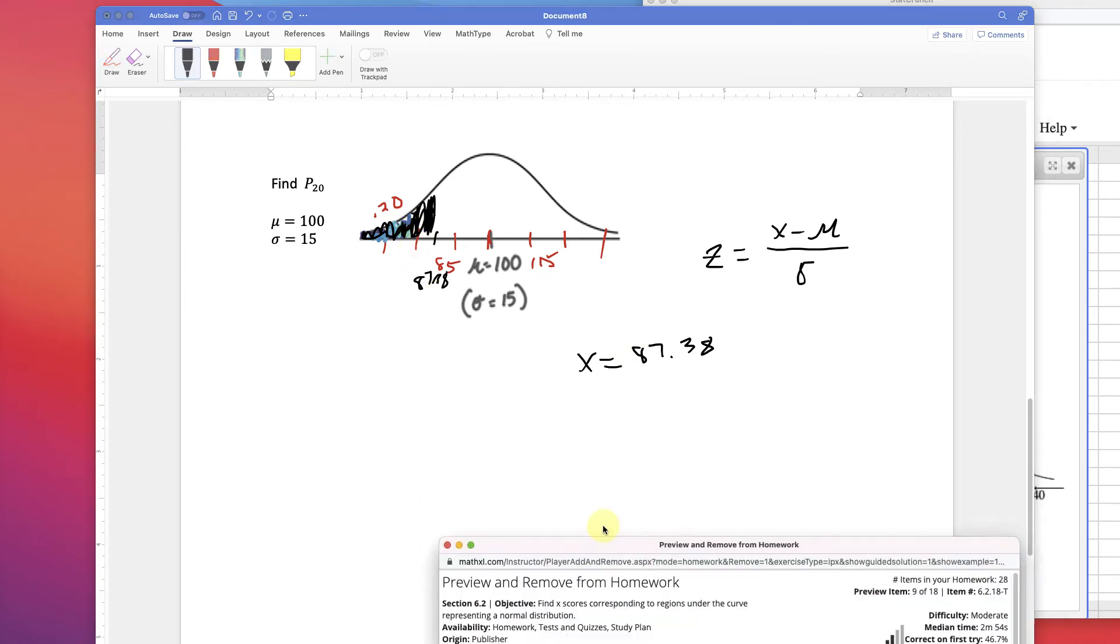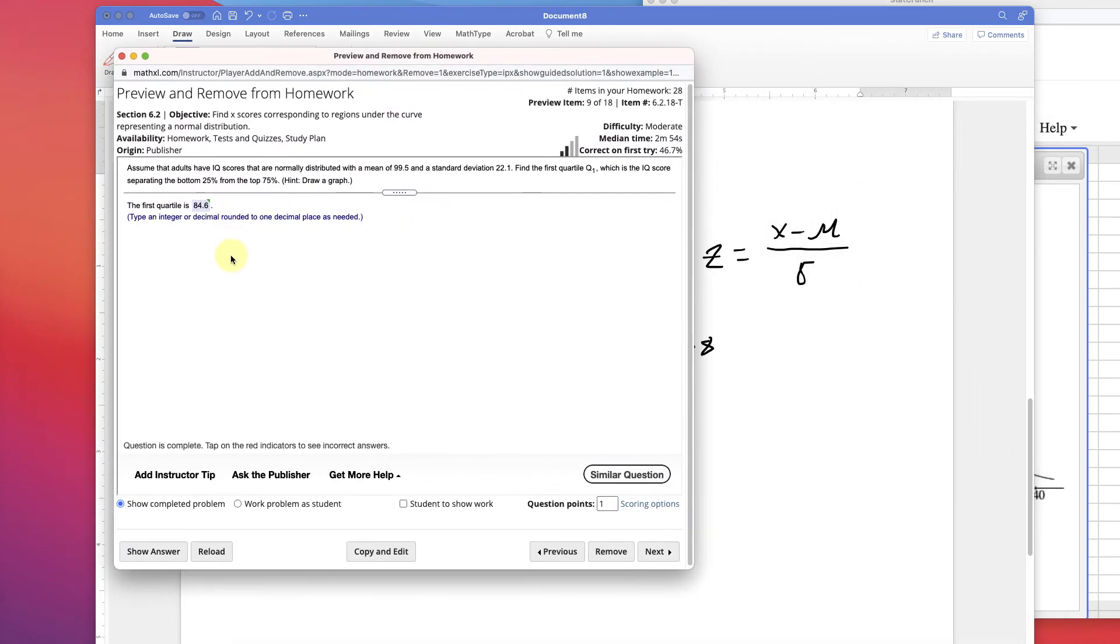Alright, let's use one with some context here. Assume that adults have IQ scores that are normally distributed with a mean of 99.5 and a standard deviation of 22.1.